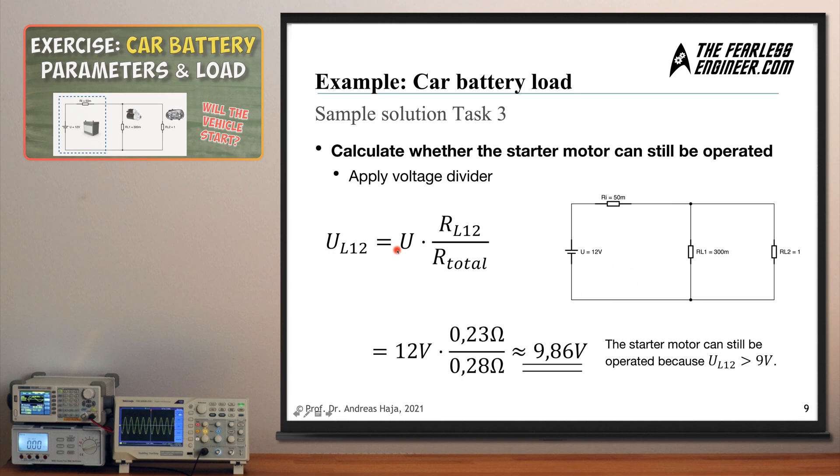And then what you can do now is you can apply the voltage divider. And the voltage divider, if you have watched this video on how to compute the voltage split across several components in a circuit, then you know that you have to multiply the total voltage with the fraction or with the ratio of the resistor which you are looking for, which is the load resistor L12, which means the combined resistance here of these two, divided by the overall resistance. And the combined resistance is 0.23 ohms and the overall resistance including the 50 milliohm resistor of the internal battery is 0.28 ohms, and this gives us this multiplication and division gives us an overall voltage drop across this resistor here of 9.86 volts.